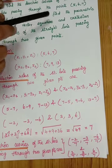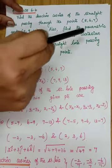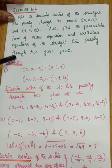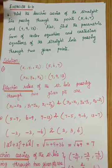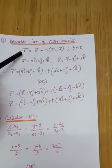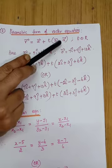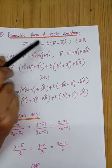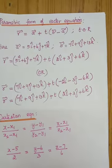Also, what is asked? Find the parametric form of vector equation of the straight line passing through the two given points. The formula is: r vector equals a vector plus t times (b vector minus a vector), where t belongs to R. This is the parametric form of vector equation of the straight line passing through two given points.